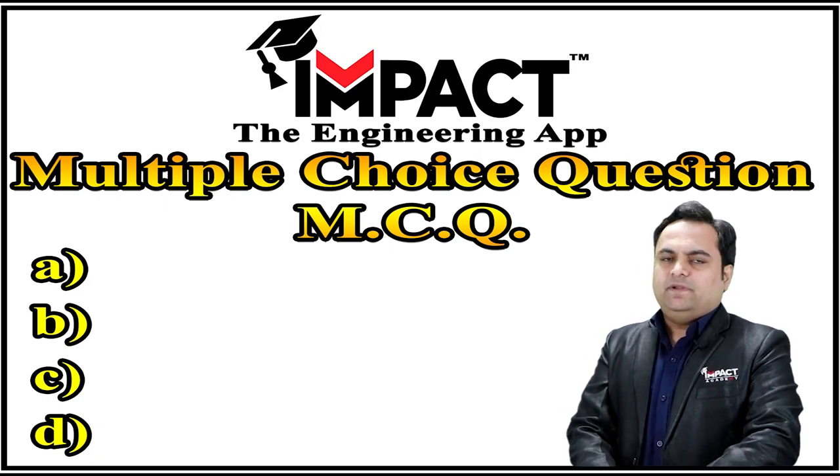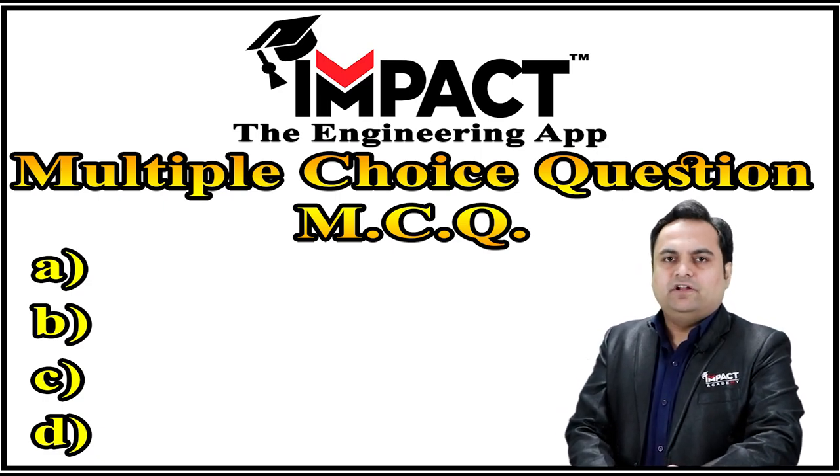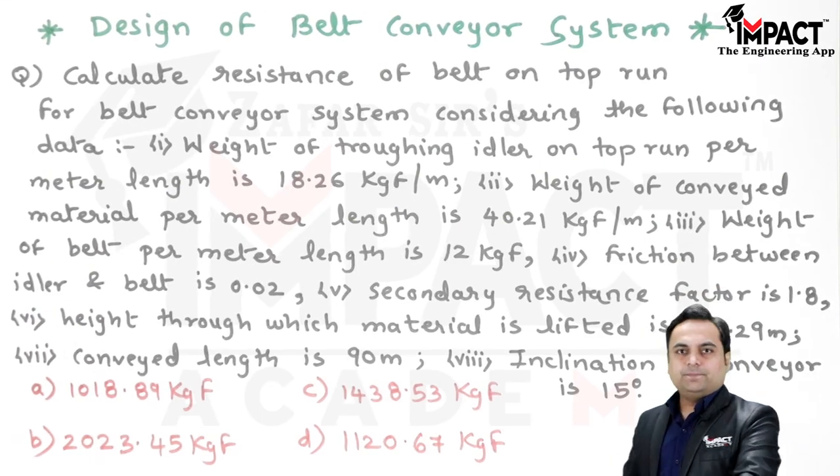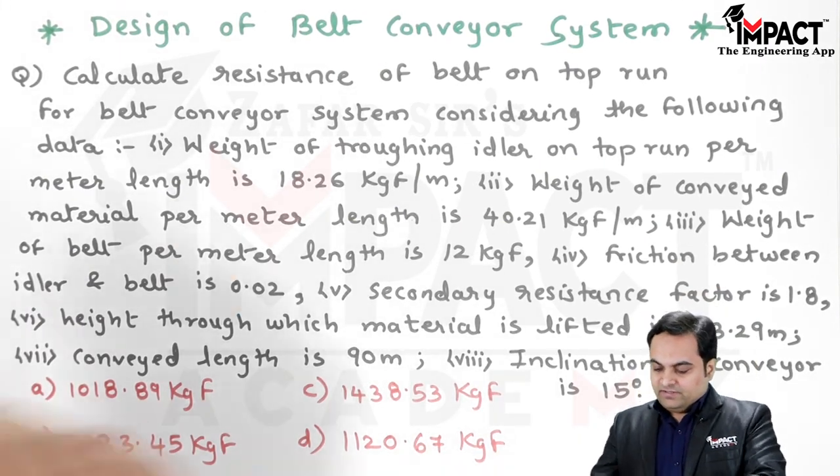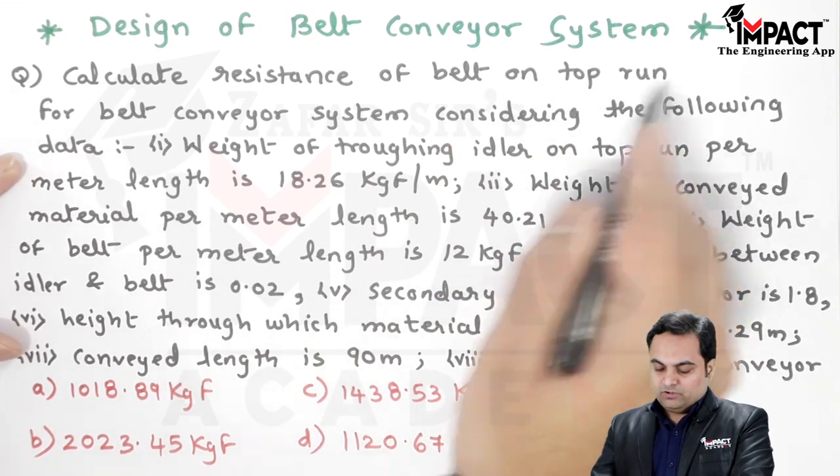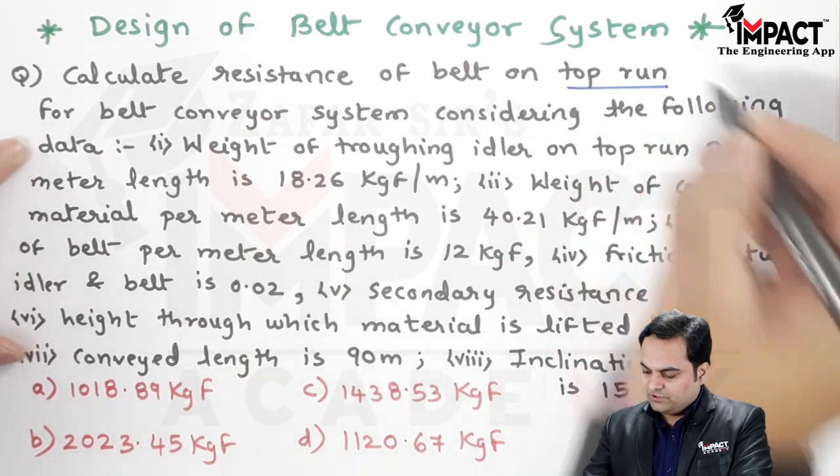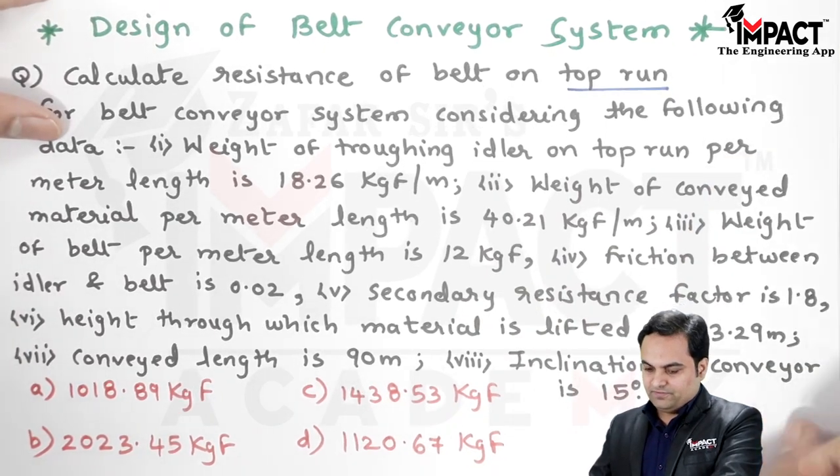Hi friends, in this video I will be explaining the MCQ on belt conveyor system. So let's get started. Now here is the question: calculate the resistance of the belt on the top run. So we have to find the resistance on the top run, for that the reference is